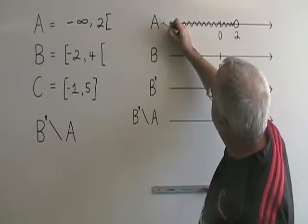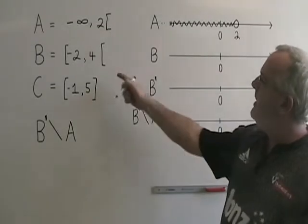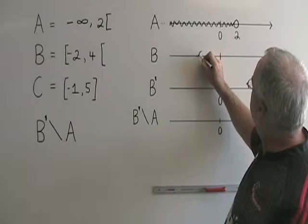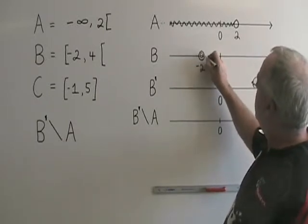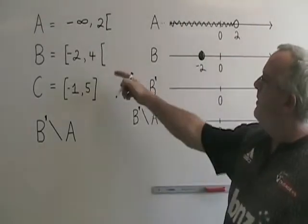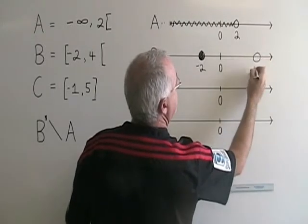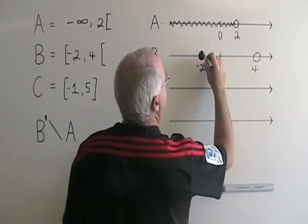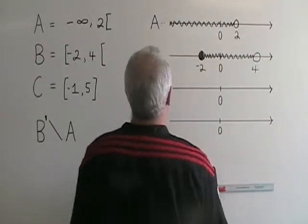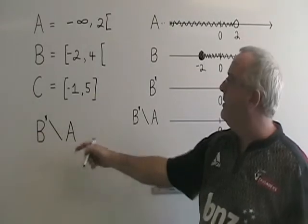And over here I can put dots to show that it continues towards negative infinity. Set B is from negative two included, so I put a solid circle at negative two, to four not included. I put an open circle at four, and I shade in between them. I don't have to graph set C for this question because it's not involved in the question.